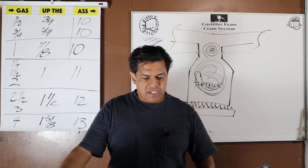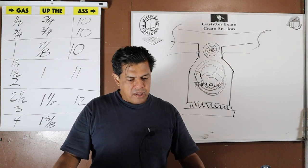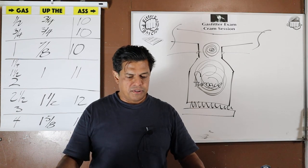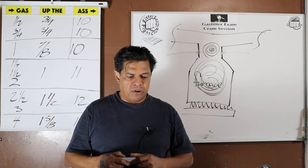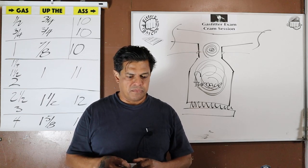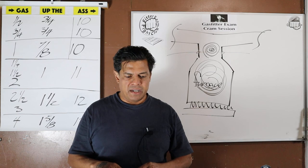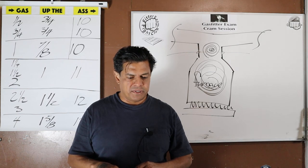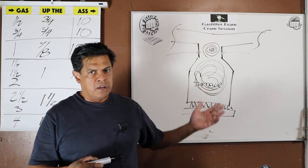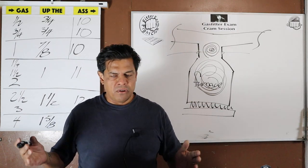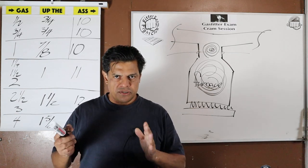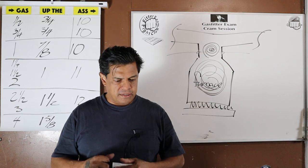Question 17: threaded fittings shall be no larger than four inches. On a gas fitter exam, it's understood we're talking about a gas system. We've been over this — no larger than four inches is the largest size threaded fitting you can use in a gas system.